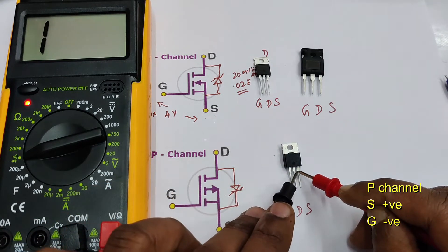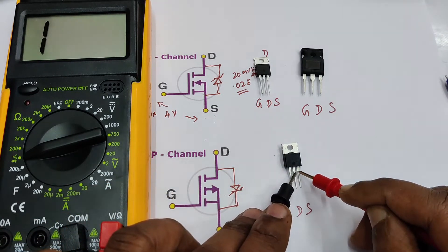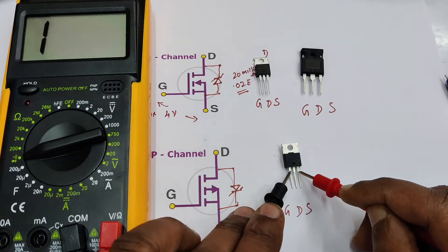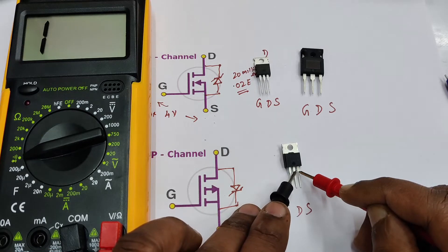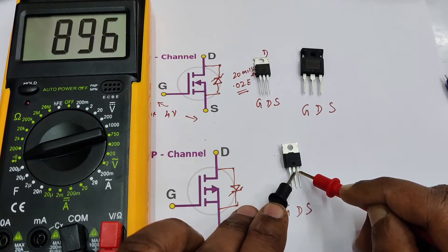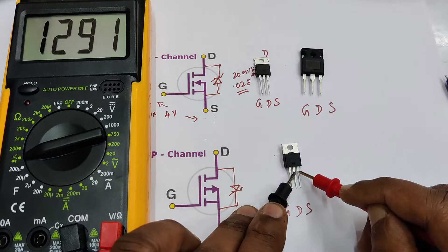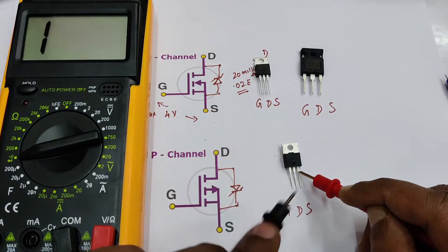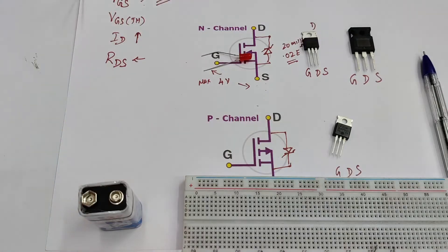Same way you can check the P-channel also. Place the positive probe at source and negative at drain — it will show no resistance.